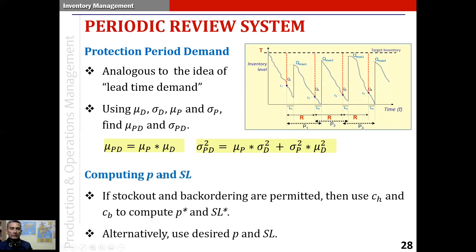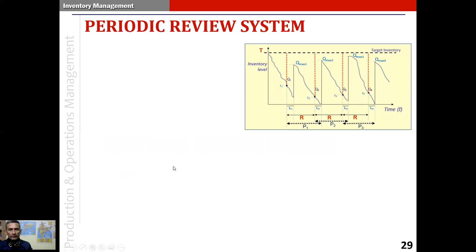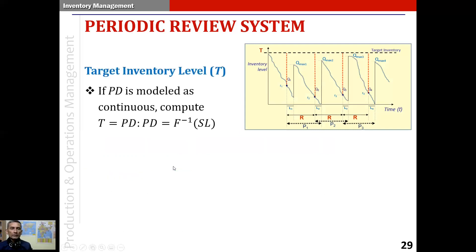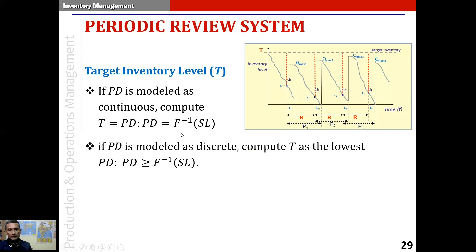We also take into account any stockout proportion or service level that has been given to us, and we use this to compute the target inventory level. The target inventory level T is the inverse distribution function of the service level. If it is continuous, we directly apply that inverse function. If the protection period demand is modeled as discrete, then T is computed as the lowest value of the protection period demand which is at least equal to F-inverse of the service level.